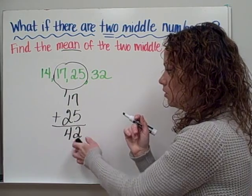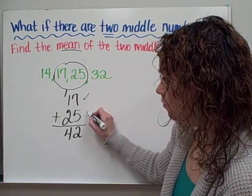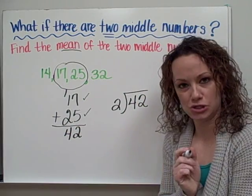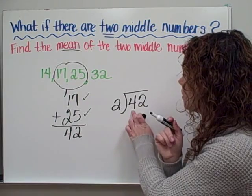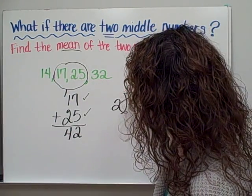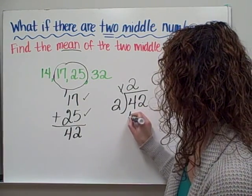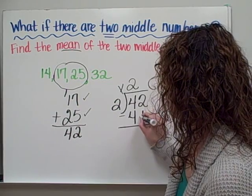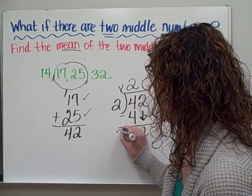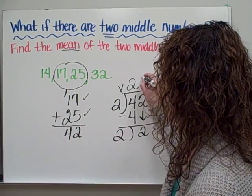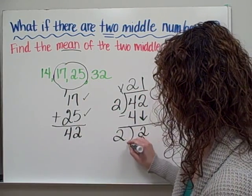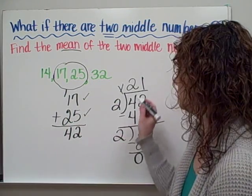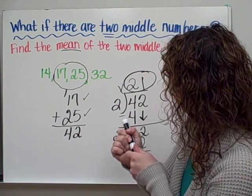To find the mean, I then need to divide 42 by the amount of numbers that I added up — so how many numbers did I add up? Two. So I create a division problem: 42 divided by 2. Using long division: 2 goes into 4 two times, put that up top, multiply — 2 times 2 equals 4 — subtract, 4 minus 4 equals 0, bring down the 2. 2 goes into 2 one time, 1 times 2 equals 2, subtract — no remainder. The answer is 21.